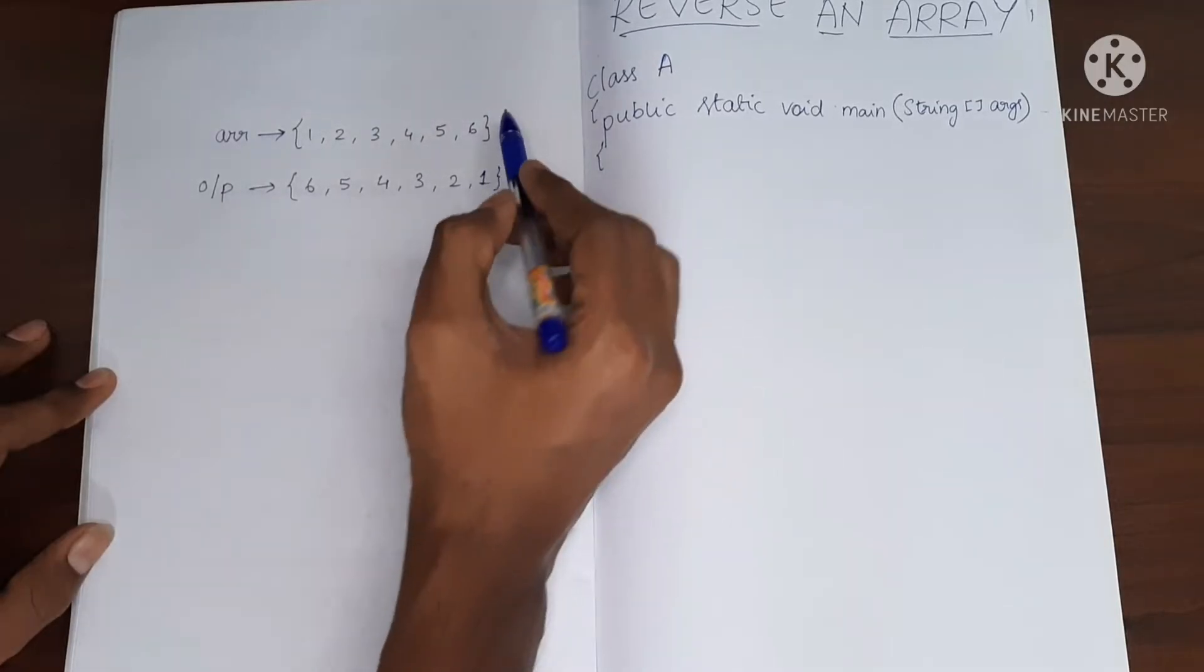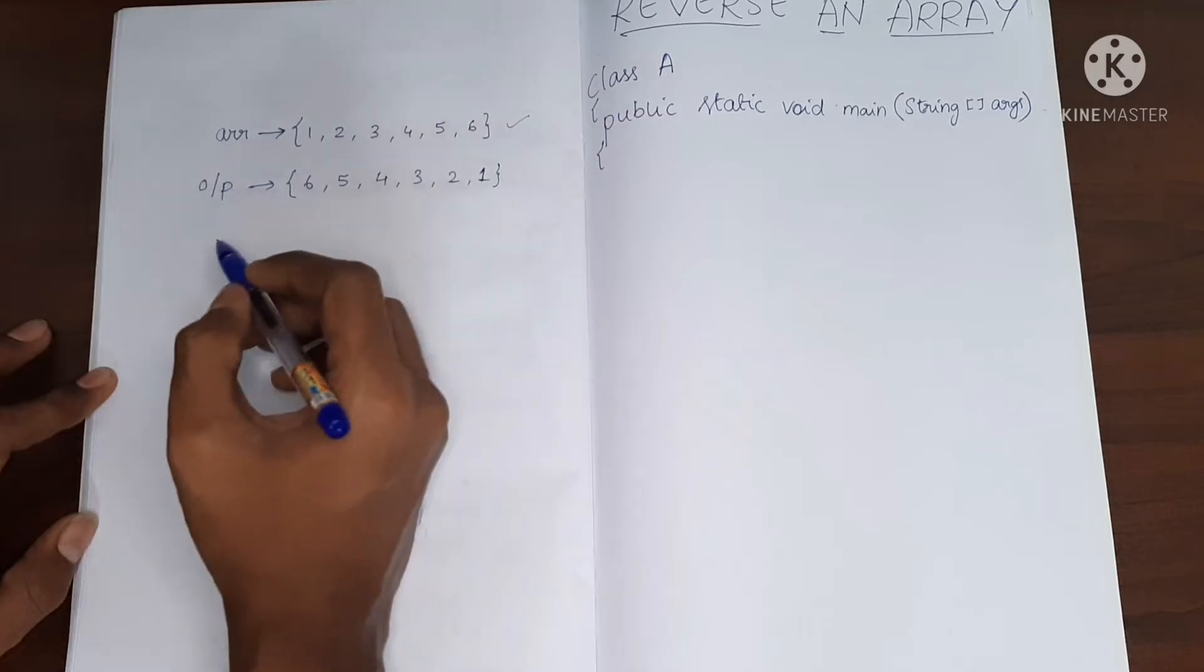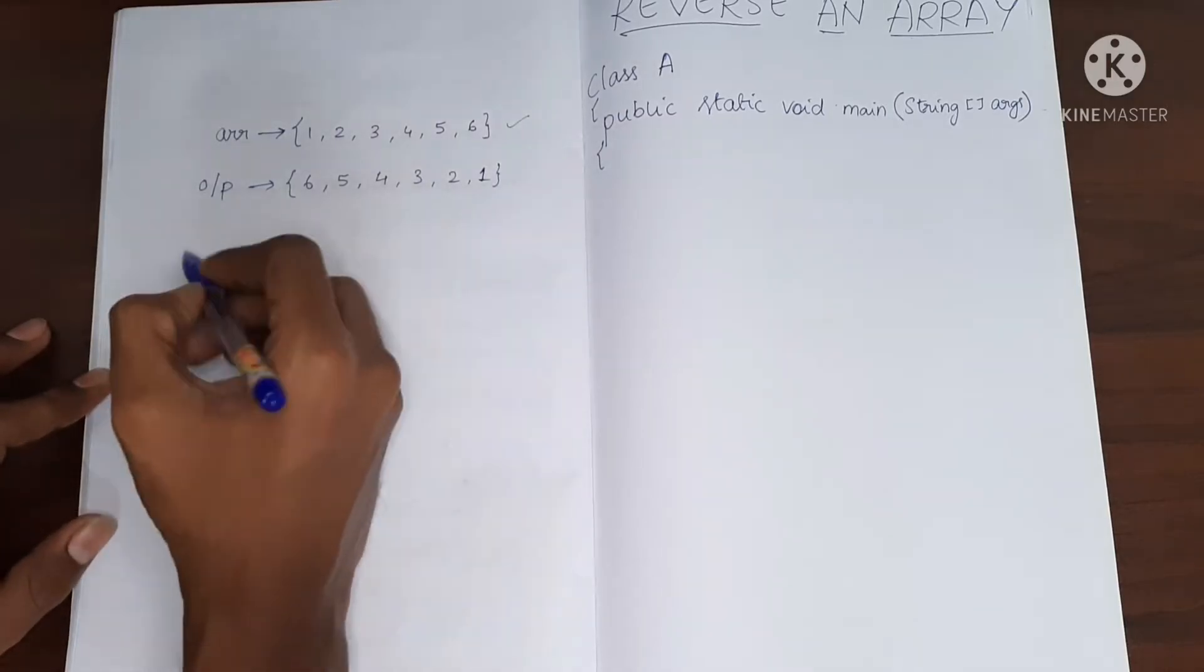This is the expected output for the given input. So now let's discuss the logic. So this is the array.